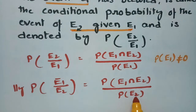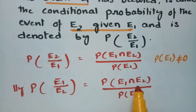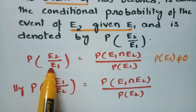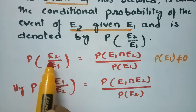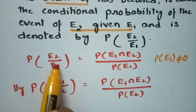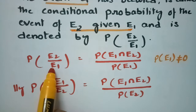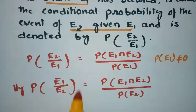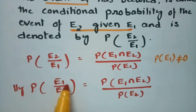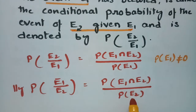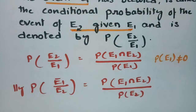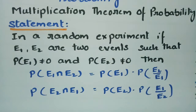One thing to remember: in the denominator, whichever event is given — E1 or E2 — that event appears in the denominator. The intersection part is common for both. E1 must happen before E2 in the first case, and E2 before E1 in the second. Using this formula, let's proceed to the proof.